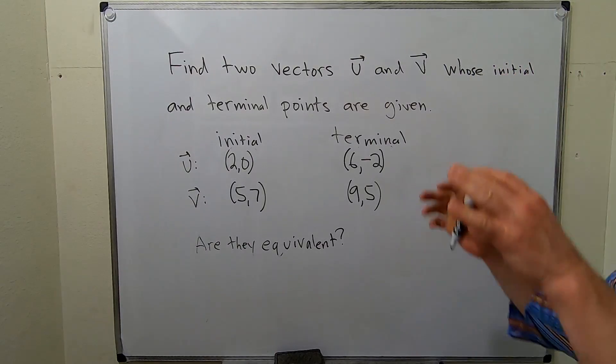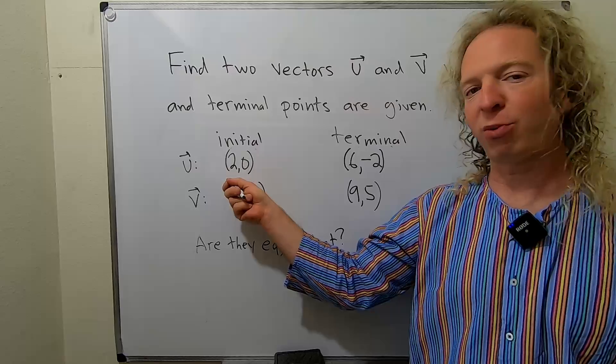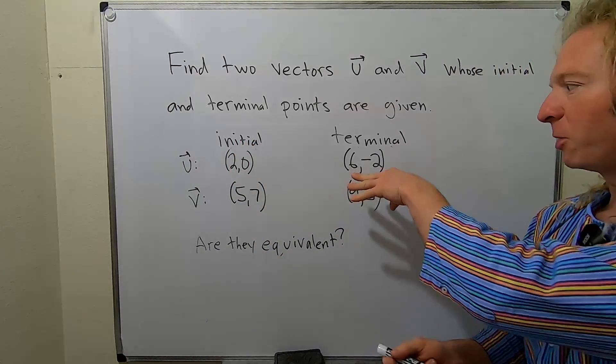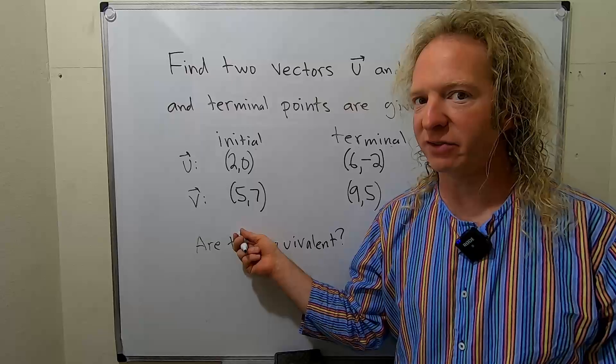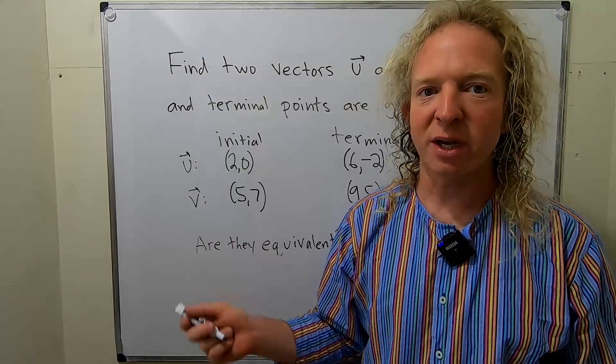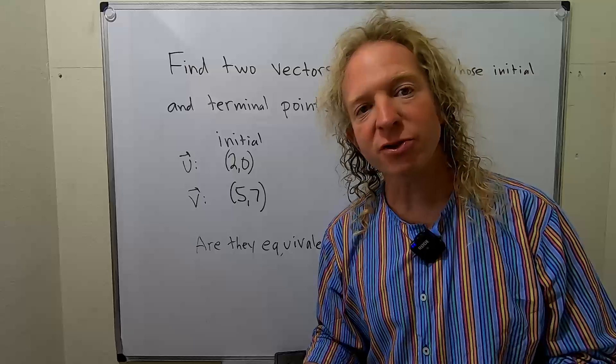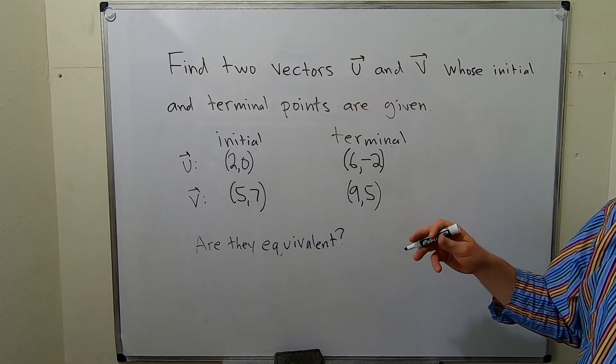Find two vectors u and v whose initial and terminal points are given. We have vector u with initial point (2,0) and terminal point (6,-2), and vector v with initial point (5,7) and terminal point (9,5). There's a follow-up question: are the vectors equivalent? Two vectors are equivalent if they have the same magnitude and direction. Let's go ahead and find u and v.